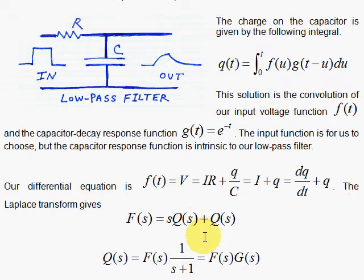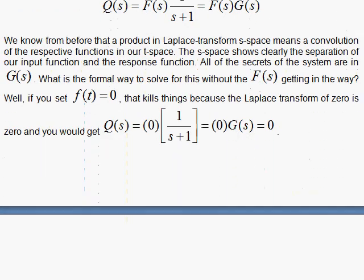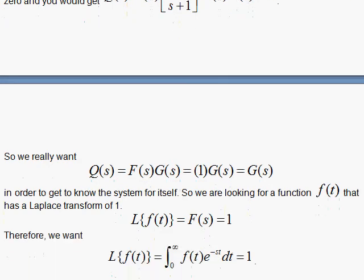So what I really want is to have a function, little f(t), so that the Laplace transform is 1. If this is 1, then the solution in transform space is completely that G, capital G(s), which has all the essential properties of that system. Let's look for a function so that the Laplace transform of it gives us 1.